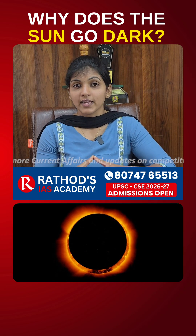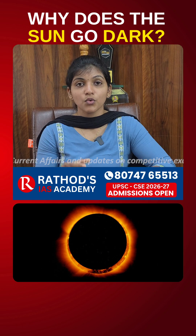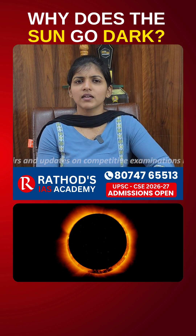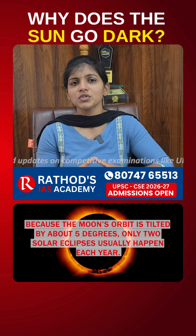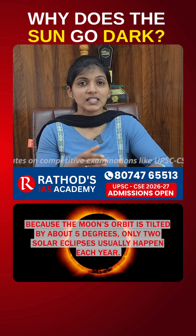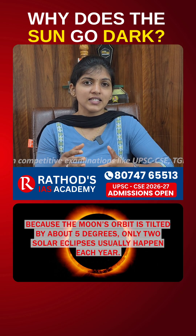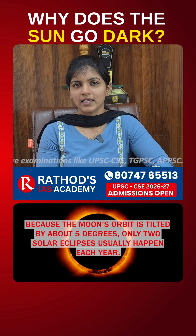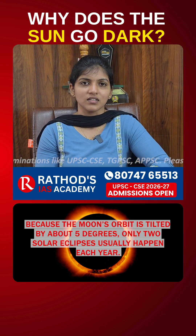Interestingly, solar eclipses occur only during the new moon. But because the moon's axis is tilted by 5 degrees, we see only two solar eclipses each year.